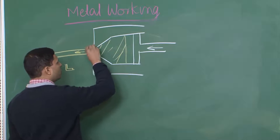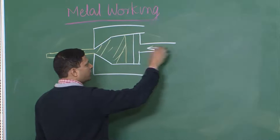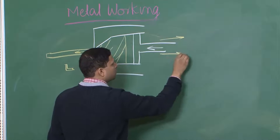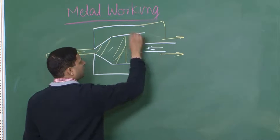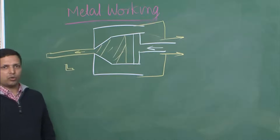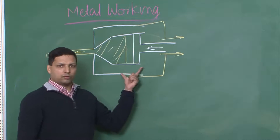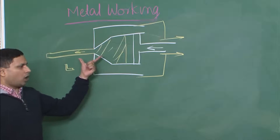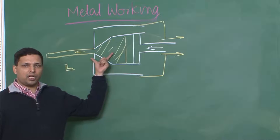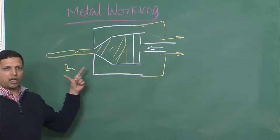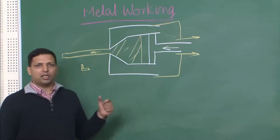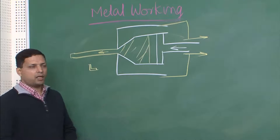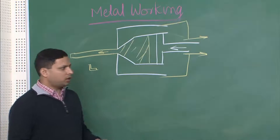In direct extrusion, the piston moves in the same direction as the extruded material. However, in indirect extrusion, when you press in one direction, the material comes out in the opposite direction. There are advantages and disadvantages of both, with friction being one of the most important considerations. How much strain is required, what is the yield stress — all those things we will be able to answer by going through this course.